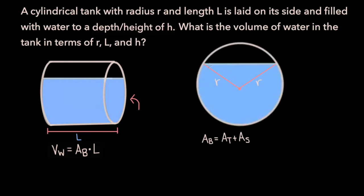Let's first work on computing the area of this triangle. To find the area of a triangle, we need to know its base and height. We know that the height of the water in our cylinder is h, and the length of this line segment is r, since it's another one of the circle's radii. So if the height of the water is h and the length of this line is r, then the height of the triangle must be h minus r.